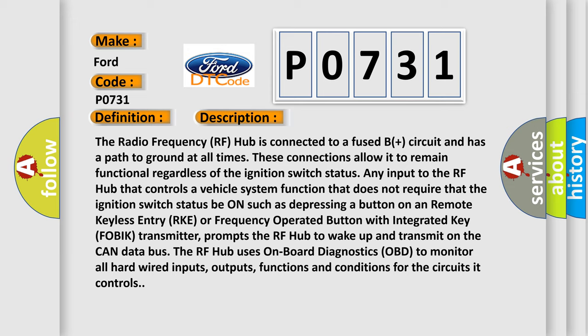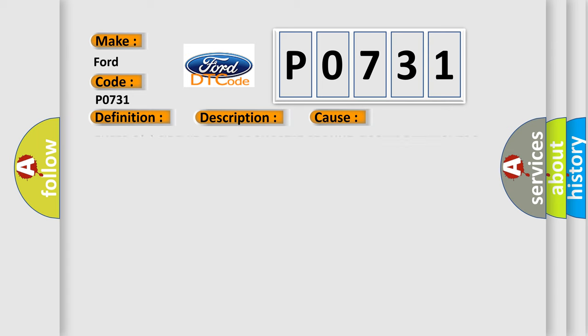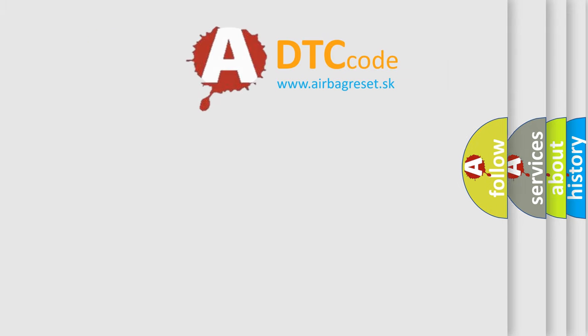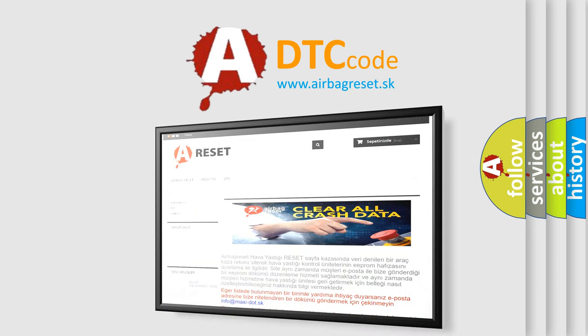This diagnostic error occurs most often in these cases: fused B+ circuit open or shorted to ground, circuit open, Control Area Network (CAN C) bus circuits open or high resistance, or a faulty Radio Frequency Hub (RF HUB) module. The Airbag Reset website aims to provide information in 52 languages. Thank you for your attention and stay tuned for the next video.